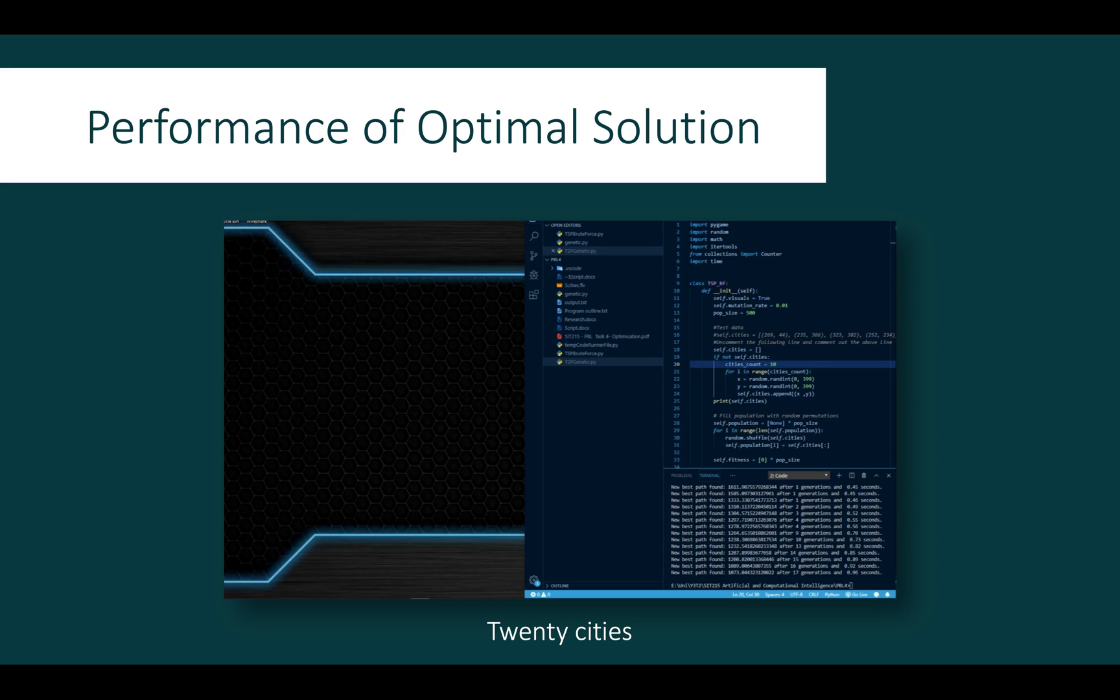Diversity can be provided through increasing the population size and changing the mutation rate, although as shown here, increasing the population size can significantly slow the processing speed for each generation. For cases where an approximation of the best solution will suffice, this is an appropriate solution.